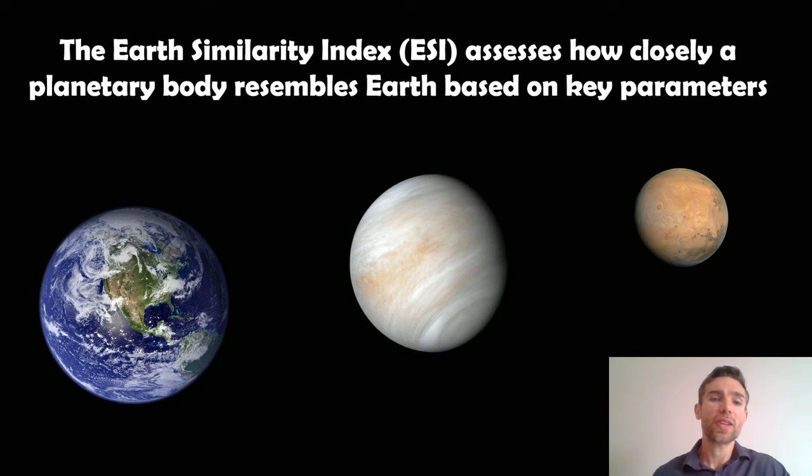So the Earth similarity index is a way of assessing how closely an exoplanet might resemble Earth, given some key parameters. What we can do is we can calculate and measure certain things of these planets. We can use those to then determine how similar they are to Earth. It doesn't necessarily mean that they're habitable or that they have life, but it's a way of assessing it and giving a good approximation as to maybe which are the best ones to then study more.